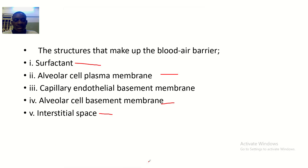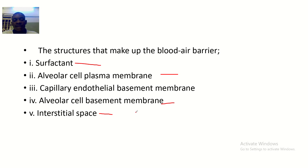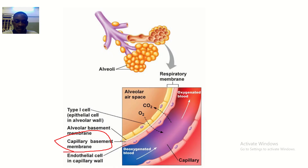The alveolar cell basement membrane is the basement membrane of the alveoli. Then we have the interstitial space, which is the space in between the alveoli and the blood vessel.